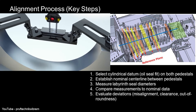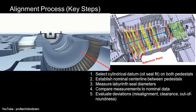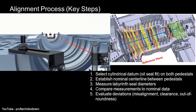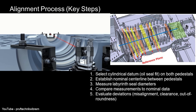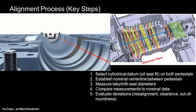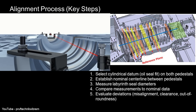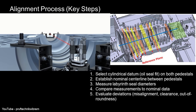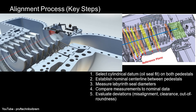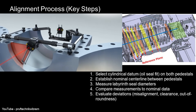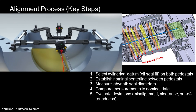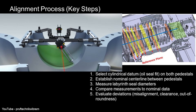First, select a cylindrical reference point — typically the oil seal fit on both pedestals. Then establish a centerline between the two pedestals. Next, measure the seal diameter at each critical point. Then overlay the measured data onto the nominal design specs.